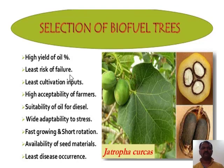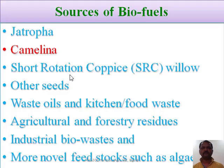Suitability of the oil for diesel should be there, and it should be widely adaptable under different or various trace conditions. The plant should be fast growing and a short rotation crop. The availability of the seed material and the particular plant should have very least disease occurrence. Such type of plants we have to select for making the biodiesel. Jatropha is one of the plants we are selecting, and a similar procedure will be adopted for selection of biofuel plants for other types of plants.